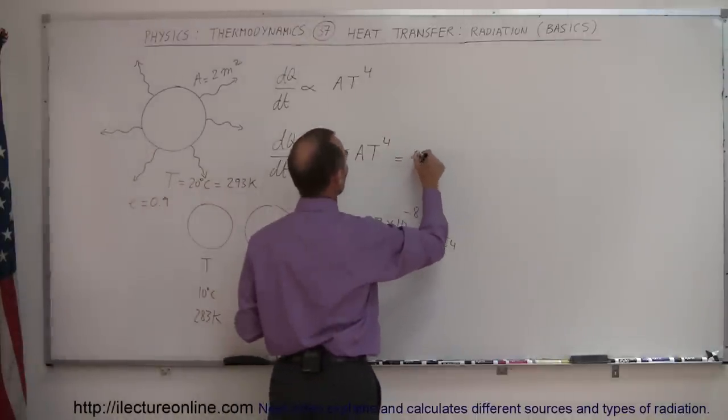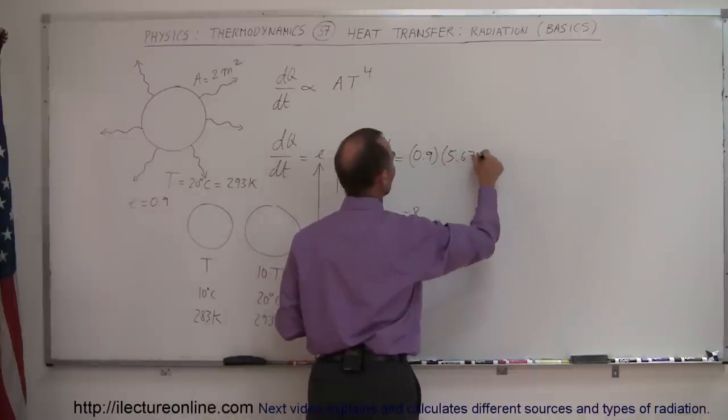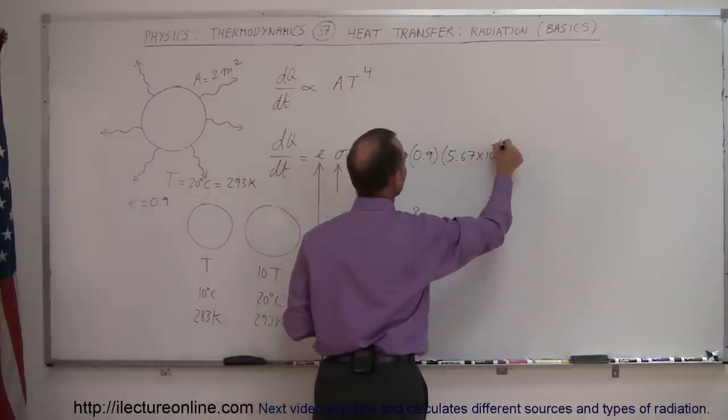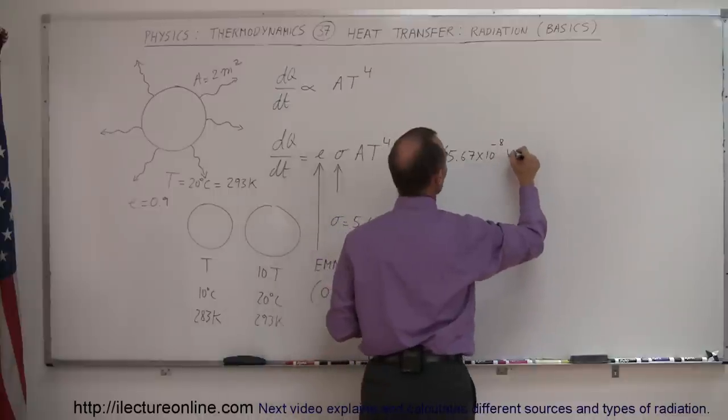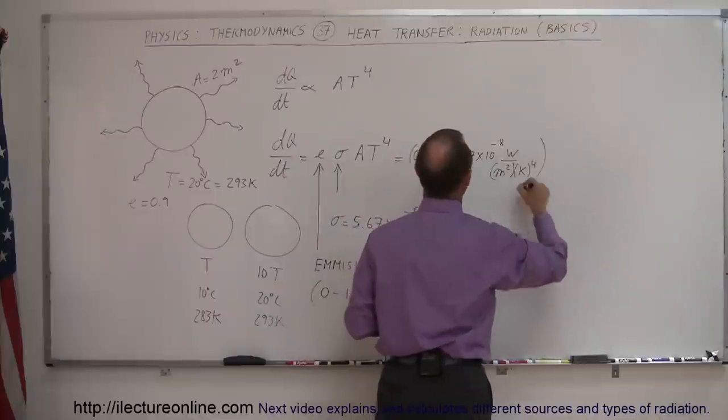So, that is equal to 0.9 times sigma, which is 5.67 times 10 to the minus 8. And that would be watts per square meter times Kelvin to the fourth power.